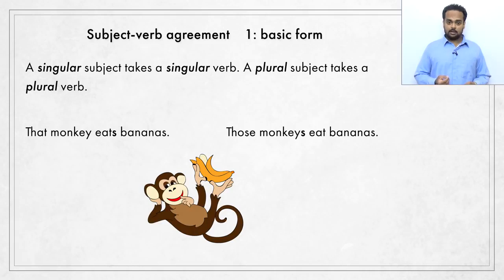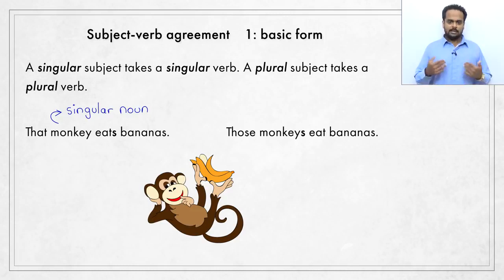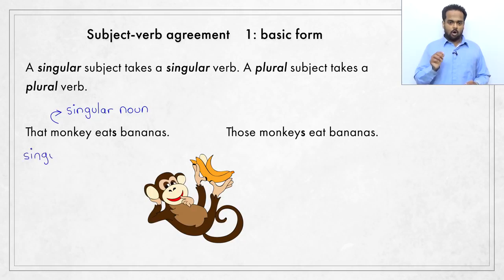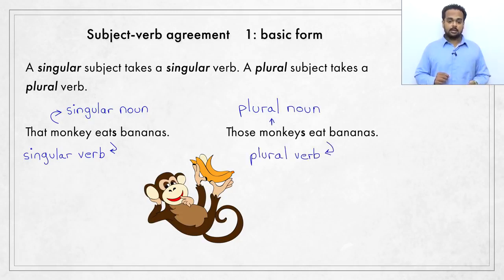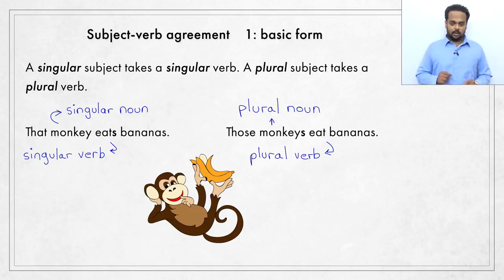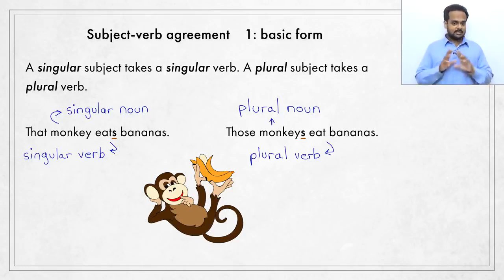Take these two sentences. In the first sentence, we see a singular noun as the subject: monkey. A noun is the name of a person, animal, or object. The verb is 'eats.' Since the subject is a singular noun — one monkey — the verb also needs to be singular: eats. But in the second sentence, we have a plural subject and a plural verb: those monkeys eat bananas. Notice that nouns and verbs behave in opposite ways. The singular noun 'monkey' becomes 'monkeys' with an S in the plural, but the verb has an S in the singular form — eats — and the plural verb 'eat' does not have an S.